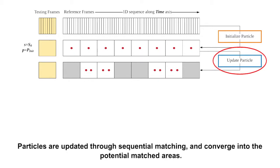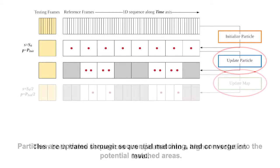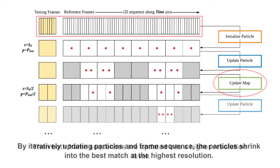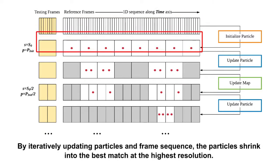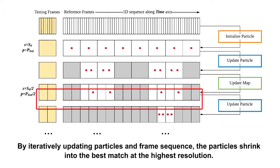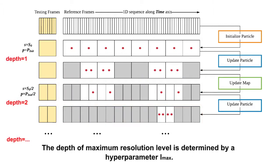Particles are updated through sequential matching and converge into the potential matched areas. Then both frame sequences are updated into a higher resolution level. By iteratively updating particles and frame sequence, the particles shrink into the best match at the highest resolution. The depth of maximum resolution level is determined by a hyperparameter Imax.